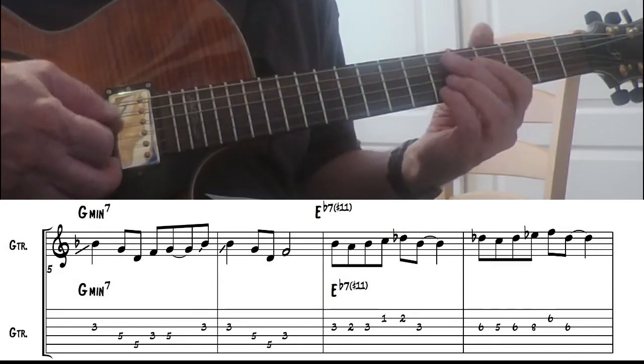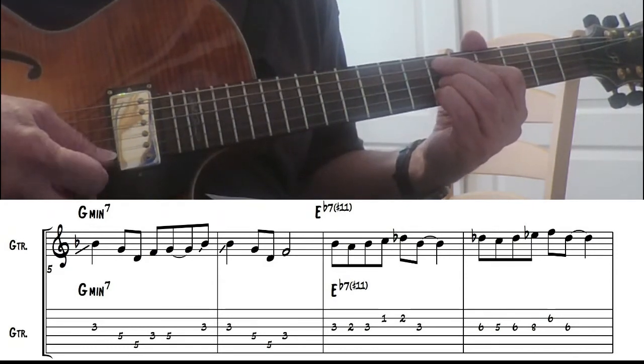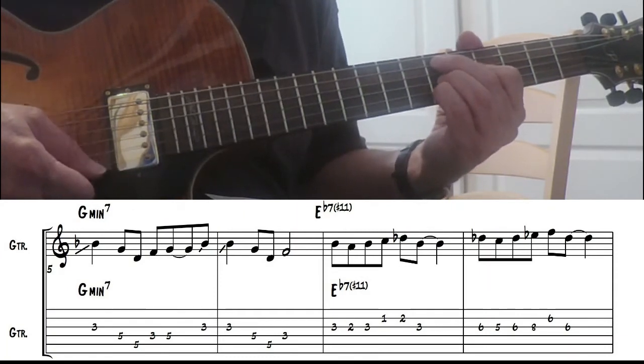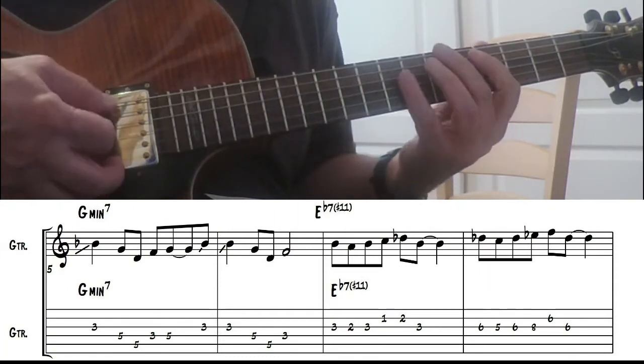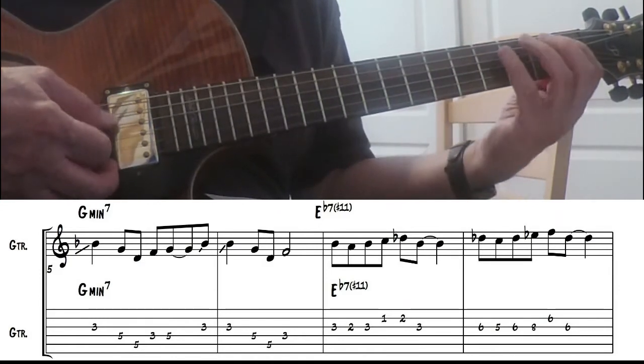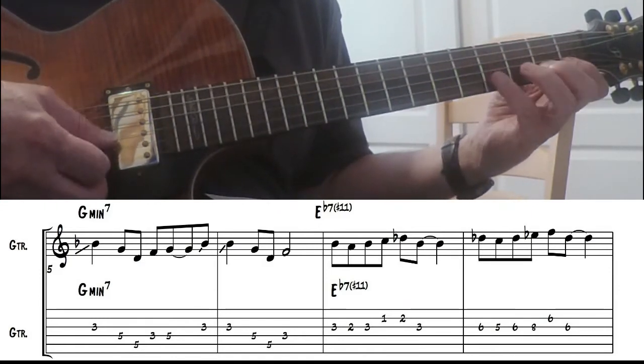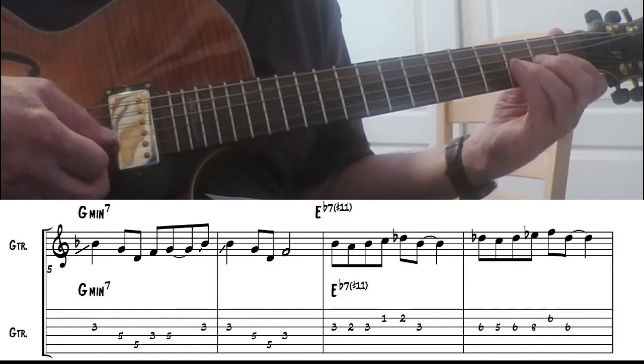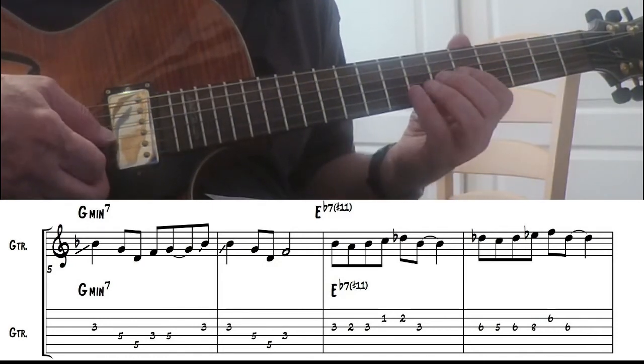Okay, now we're back to the Lydian dominant, based on the flatted 7th. So we're using, like I said, the Bb melodic minor. So here I'm using this pattern. Then I do kind of a sequence, move up to this pattern.